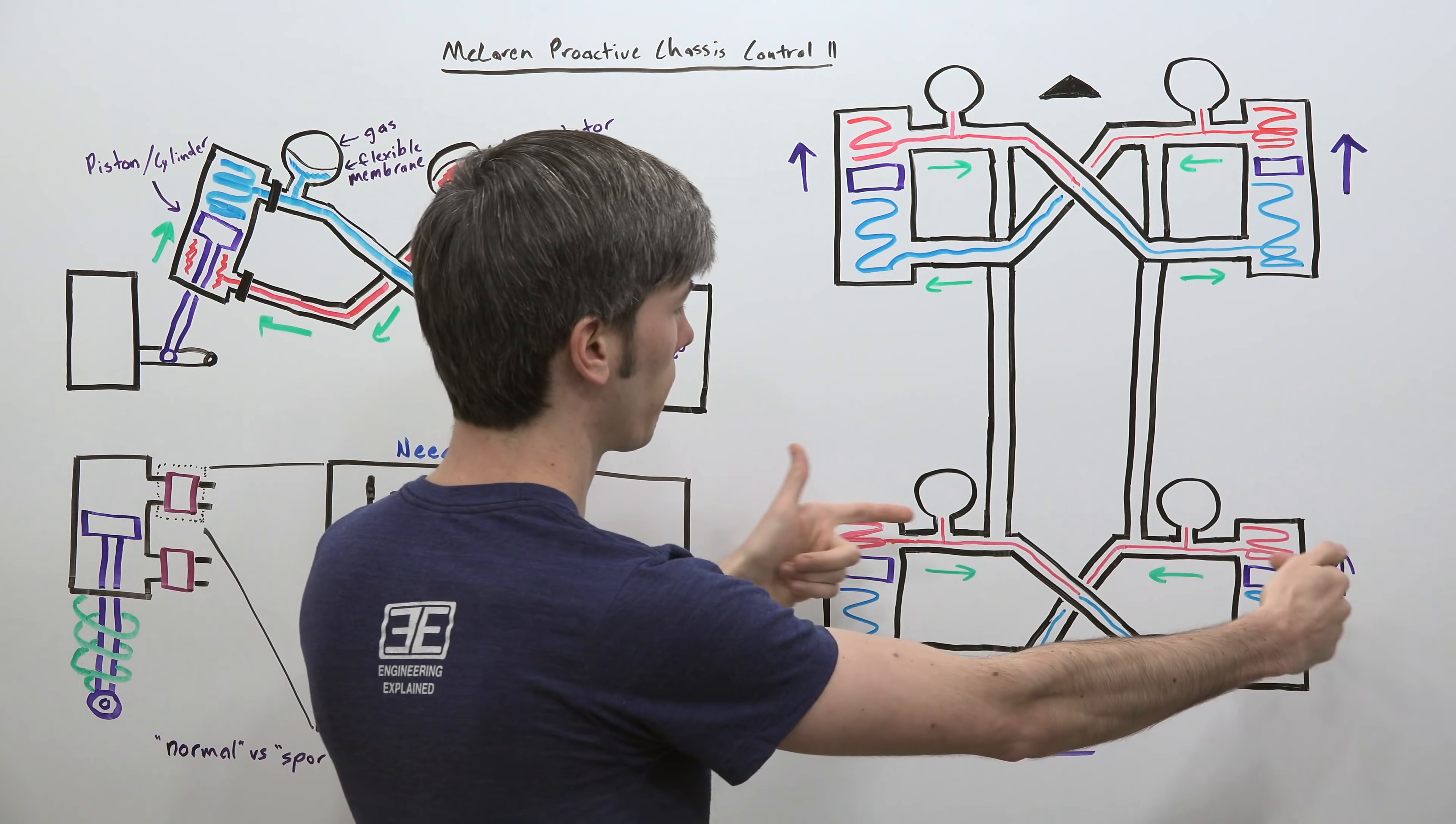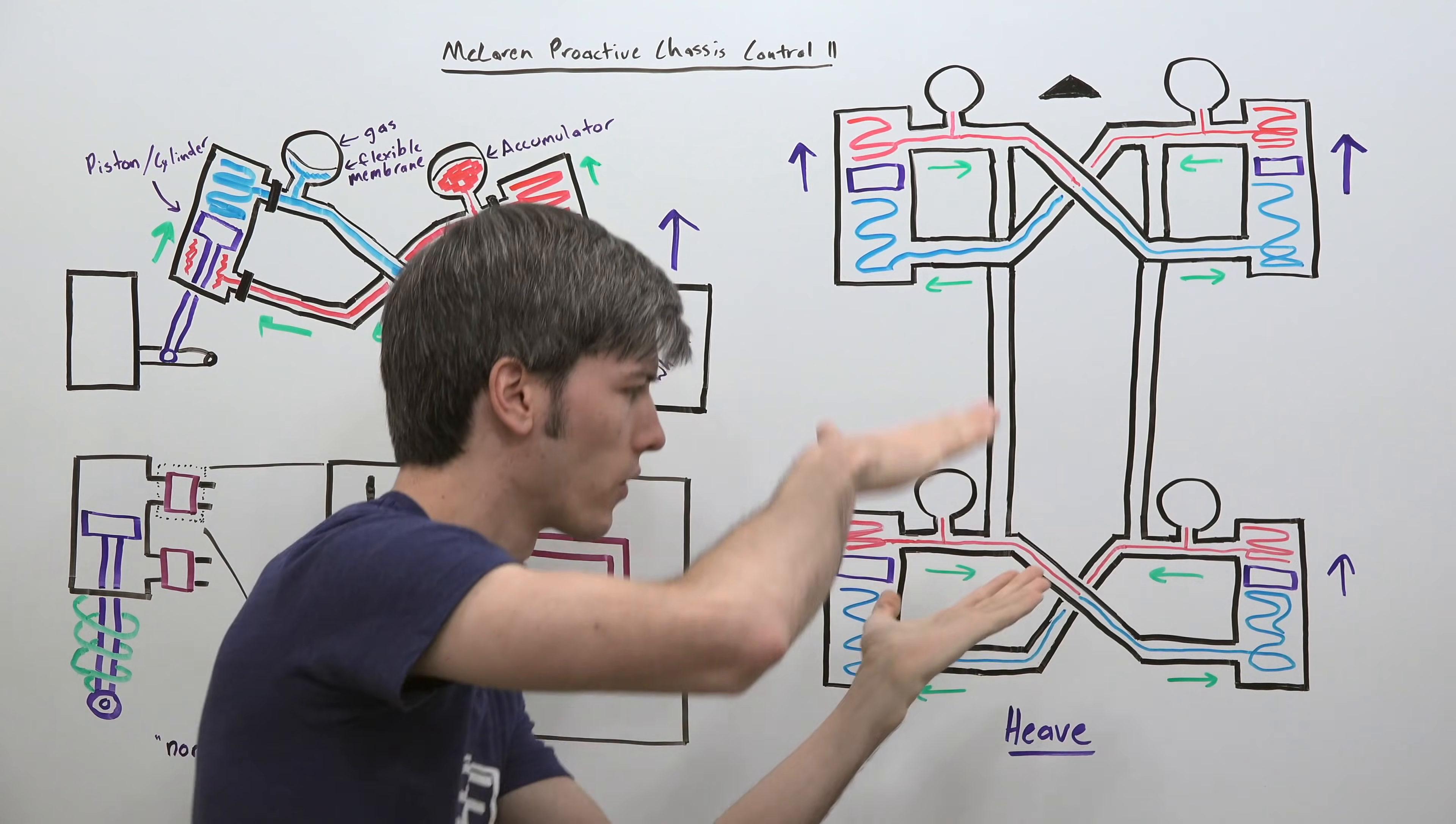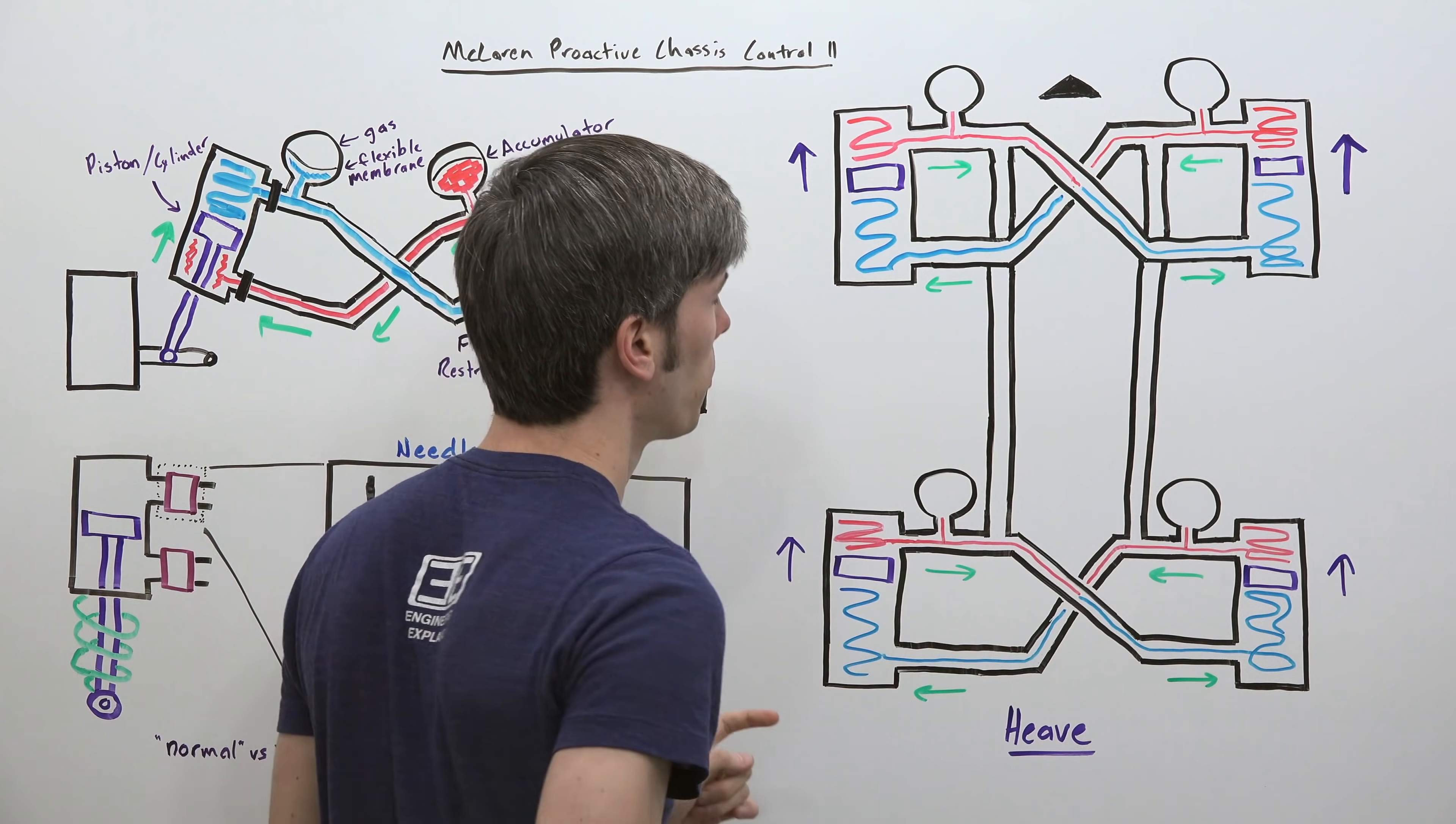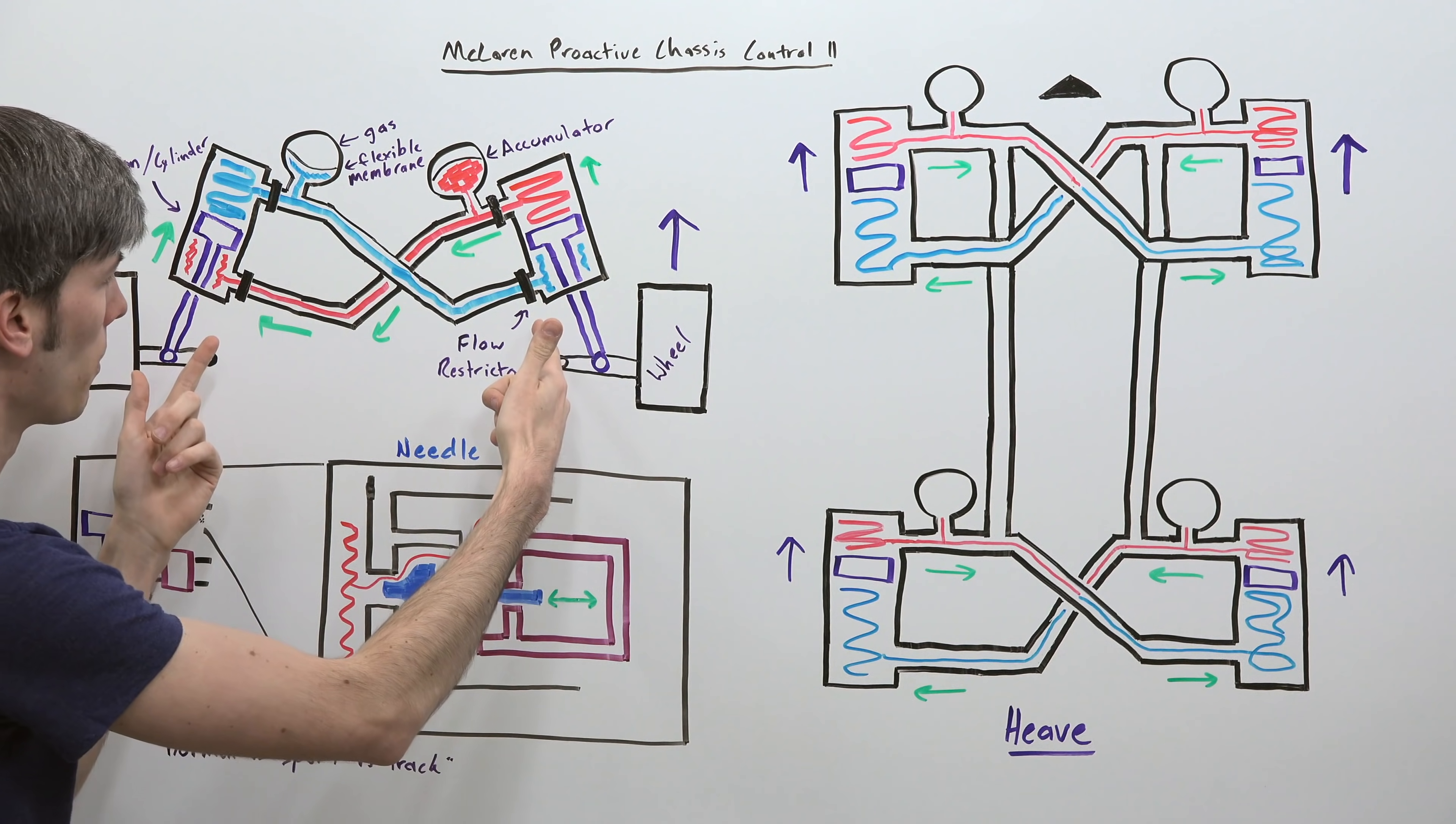And that's because you're allowing that fluid to flow directly to the other side. So if you look here at these four pistons all of them wanting to move up because the car is kind of slamming down into the ground, well it allows that high pressure to move directly over to the low pressure side of those pistons. And so of course in that scenario it's basically kind of free flowing, the only restriction will of course be these flow restrictors.